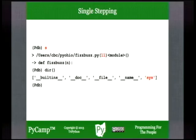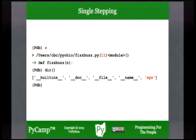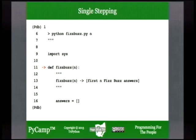The next statement to execute is that import statement. If we step through that, Python will import the sys module and bind it to the 'sys' attribute in our current namespace. You should see the instruction pointer at the start of the definition of a FizzBuzz function that takes a single argument 'n'. The debugger will tell you that statement is at line 11 of the fizzbuzz.py module.